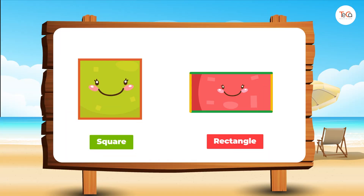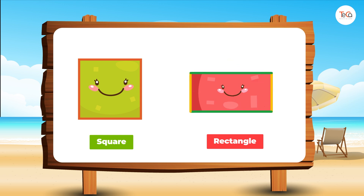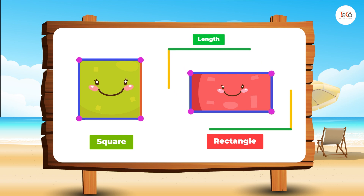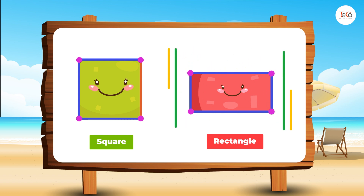Can you see? Both the square and the rectangle have four straight sides and four corners. However, the square has four equal sides, whereas the rectangle doesn't. The rectangle has the length and the width, where the length is longer than the width.